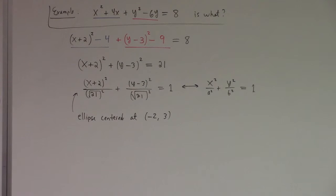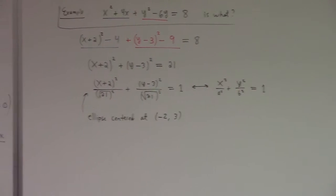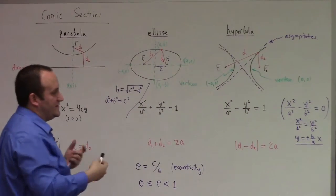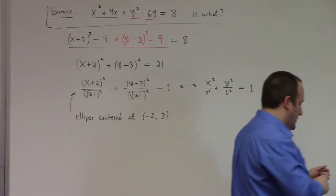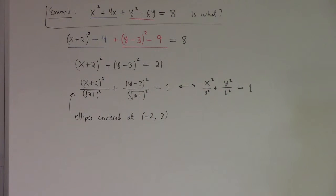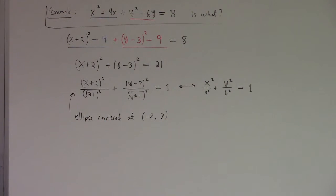This is a special case. I'll divide both sides by 21. So I get X plus 2 quantity squared over the square root of 21 squared plus Y minus 3 squared over the square root of 21 squared equals 1. It's an ellipse where x has been replaced by X plus 2 and y has been replaced by Y minus 3. This is an ellipse centered at minus 2, 3. In fact, this is a circle because A and B are equal. The semi-major and semi-minor axes are both the same distance from the origin, and that distance we call the radius.